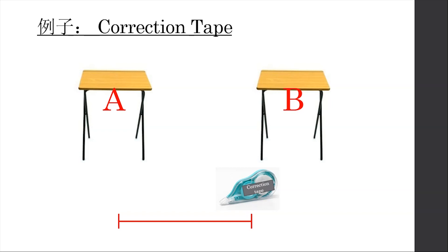Now let's look at a second example. In this photo there are two positions: Student A and Student B. There's a correction tape on the floor. If no one is in the classroom and you can't ask anyone, I'll ask you: does this correction tape belong to Student A or Student B? You might think the correction tape belongs to Student B because it's closer to Student B's position. If we consider Student A instead, since the correction tape is far from A's position, you'd think the correction tape doesn't belong to A.